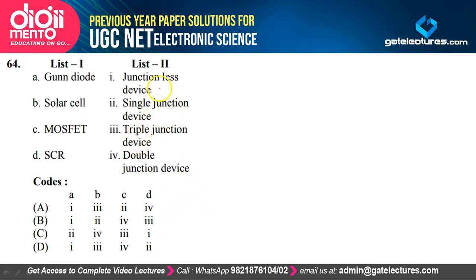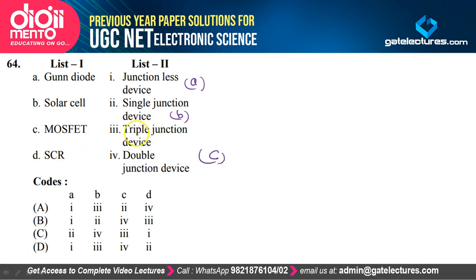Question 64: Matching devices to junction type — Gunn diode is a junction-less device (A→1); solar cell is a single-junction device (B→2); MOSFET is a double-junction device (C→4); silicon-controlled rectifier is a triple-junction device (D→3). Option B satisfies the explanation.